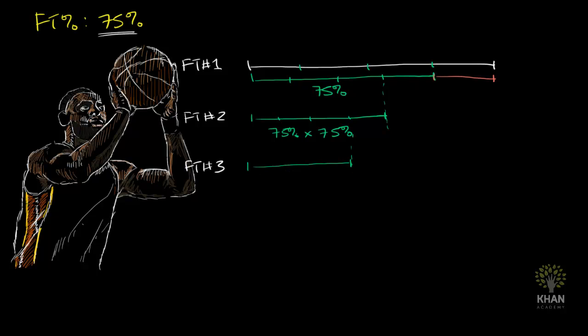So what is this going to be? This is going to be 75% of this length, which is 75% of 75% of 75%. And if you were to go all the way to free throw number 10, and I think you see the pattern here, we're going to get some very small fraction that have made all 10. It's essentially going to be 75% times 75% times 75%, 10 times. 75% being multiplied repeatedly 10 times.